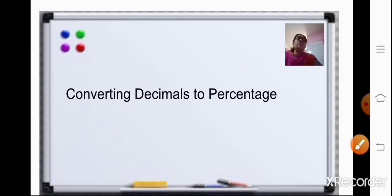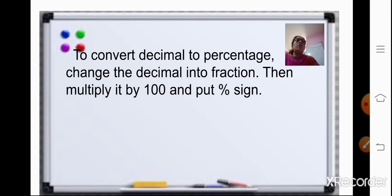Now, coming to the second topic: conversion of decimals to percentage. To convert a decimal to percentage, we will first change the decimal into a fraction, then multiply it by 100, and then put the percent sign.